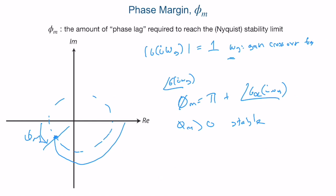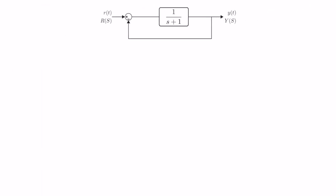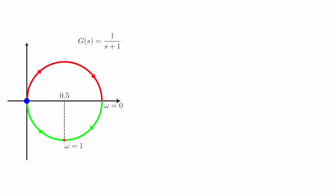Let's solve an example to understand phase and gain margins. The goal is computing phase and gain margin for a given closed-loop system. Looking at the Nyquist plot, we find where it crosses the negative real axis — in this case it never crosses, so sigma_p = 0. Therefore, gain margin = 1/0 = infinity.